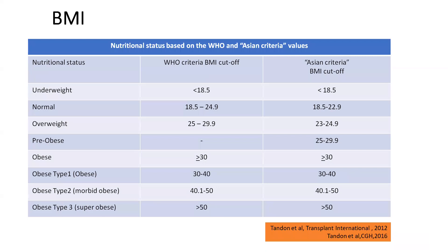As explained, the WHO cutoff is different for the Asian population. For Asian people, the normal BMI range is 18.5 to 22.9 kg per meter squared. Any patient with a BMI less than 18.5 should undergo a thorough nutritional assessment, as they are at high risk of malnutrition.